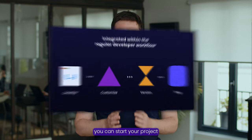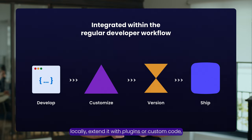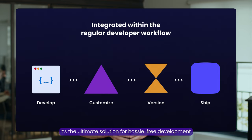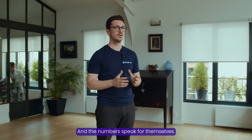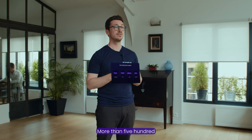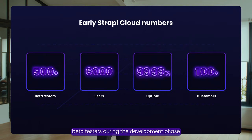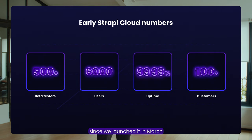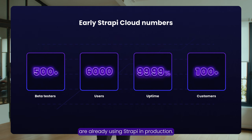With Strapi Cloud, you can start your project locally, extend it with plugins or custom code, version it through Git, and deploy it in seconds — the ultimate solution for hassle-free development. And the numbers speak for themselves: more than 500 beta testers during the development phase, 6,000 users since we launched in March, 99.99% uptime so far, and hundreds of customers already using Strapi in production.